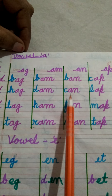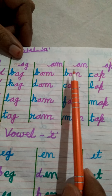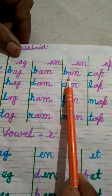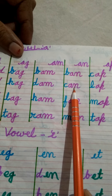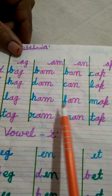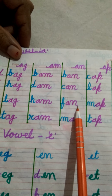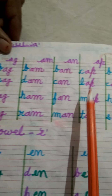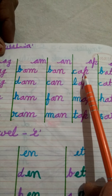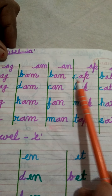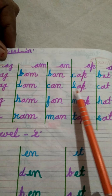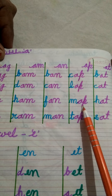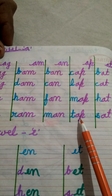Okay बेटा। A, B — App. C का sound क है। क और App मिल गया तो क्या हो गया? क + Ab = CAB। तो CAB हो गया।